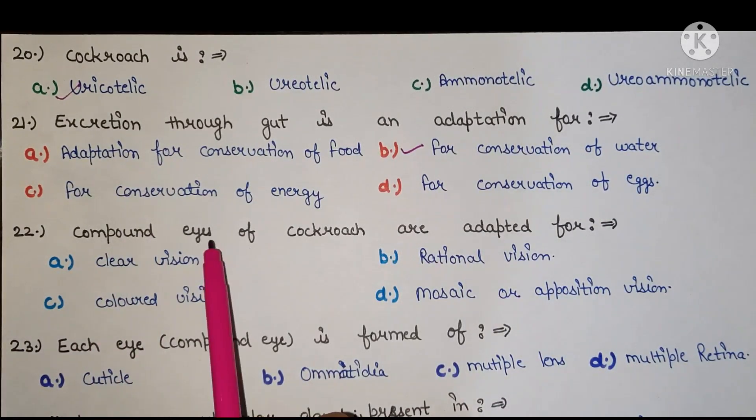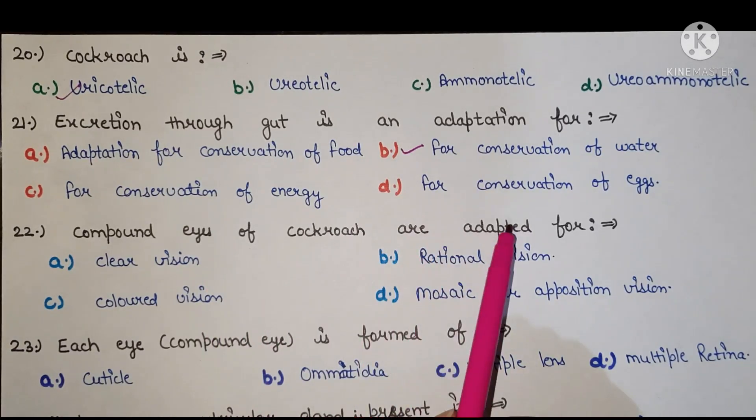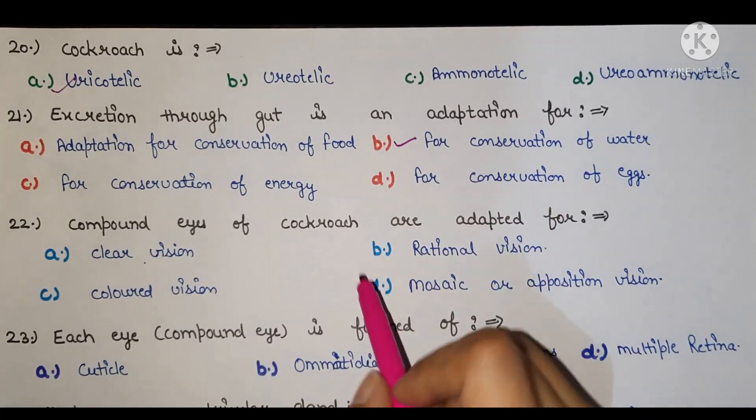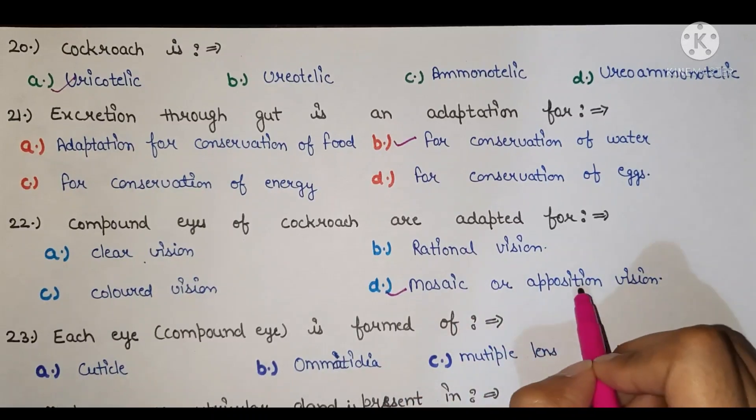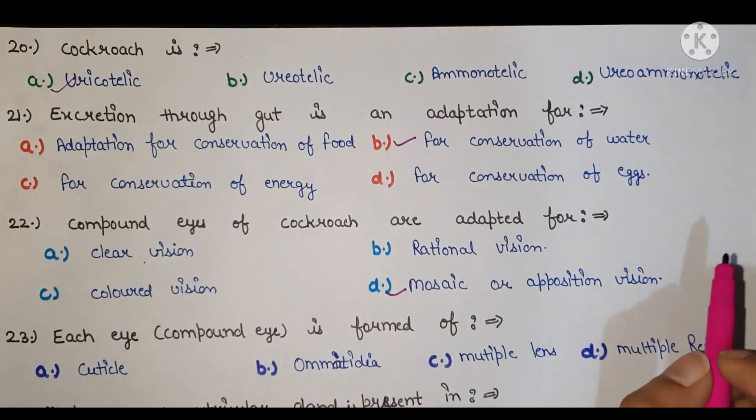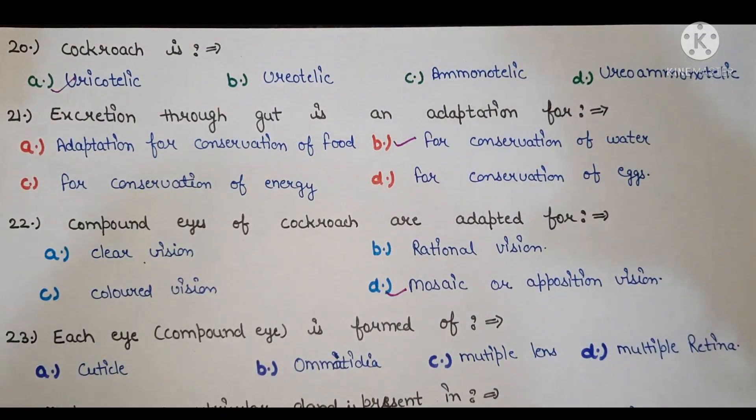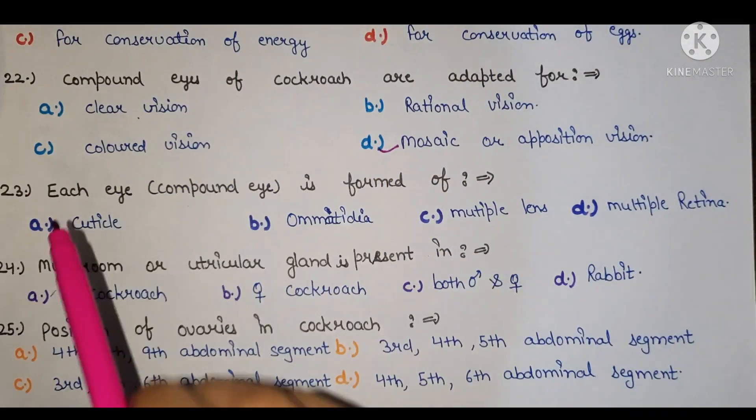Next, the compound eyes of cockroach are adopted for. The right answer is D, mosaic or apposition vision.